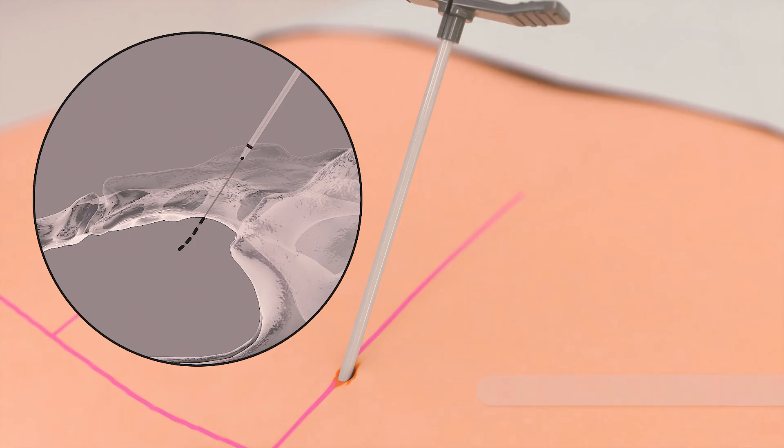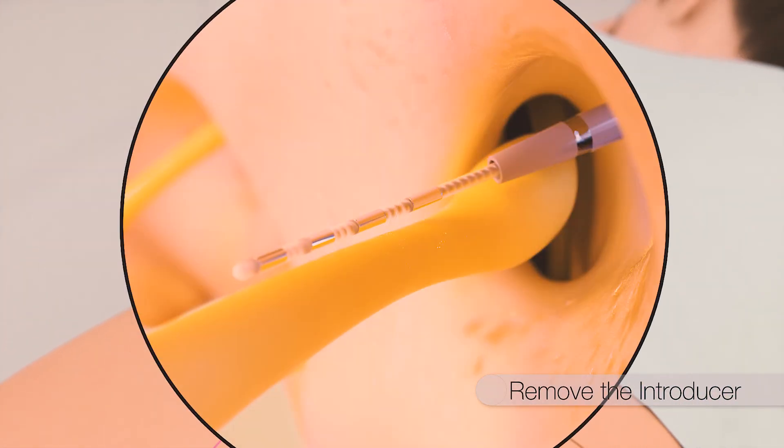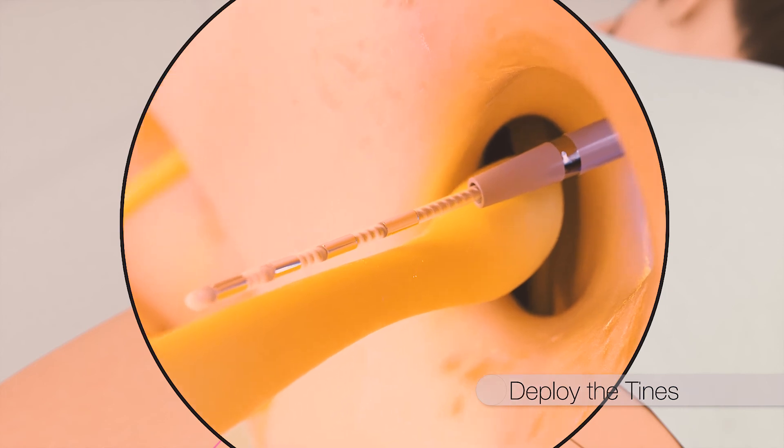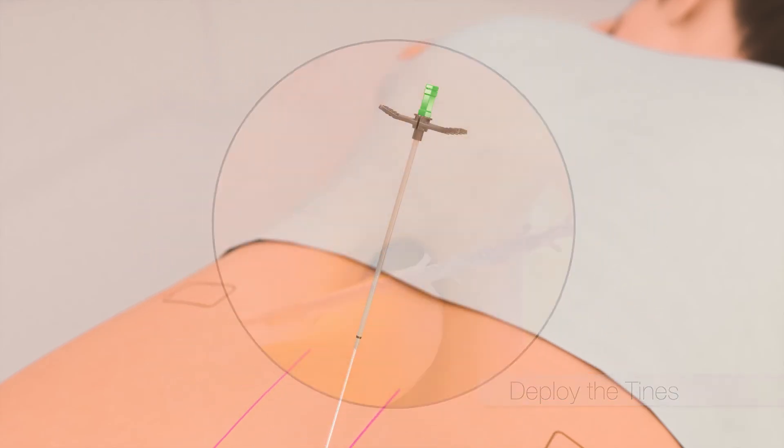Under live fluoroscopy, the introducer is removed over the tined lead, maintaining lead position and deploying the tines. The tines of the lead are arranged in a helical pattern, which results in smooth feeling deployment when removing the sheath over them. The stylet is removed along with the introducer sheath.